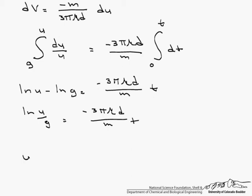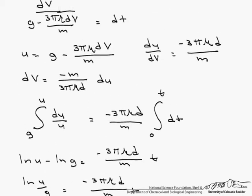So that says that u equals g times e to the minus 3 pi mu d over m times t. Now we have u as a function of t. We have to rewrite that u from our substitution that we did back here.